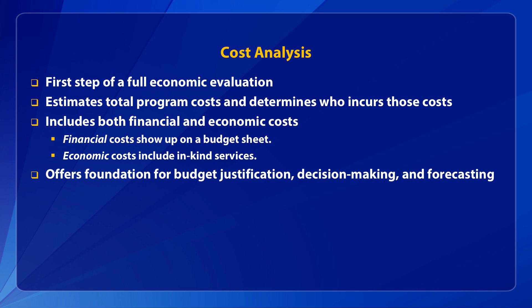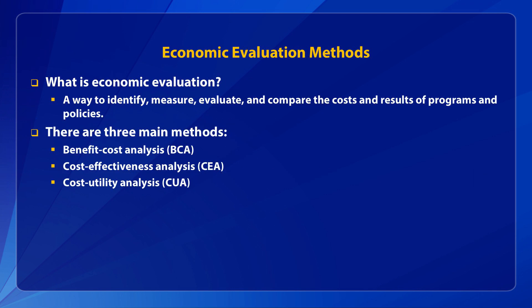A comparison of costs and benefits is the next step in economic evaluation, where we assess both the costs of an intervention and the benefits it provides. The two main types of this assessment are benefit-cost analysis and cost-effectiveness analysis. In benefit-cost analysis, discussed in Module 4, program costs and benefits are converted into dollars. In cost-effectiveness analysis, discussed in Module 5, program costs are in dollars but benefits are left in a natural unit, such as life years saved.